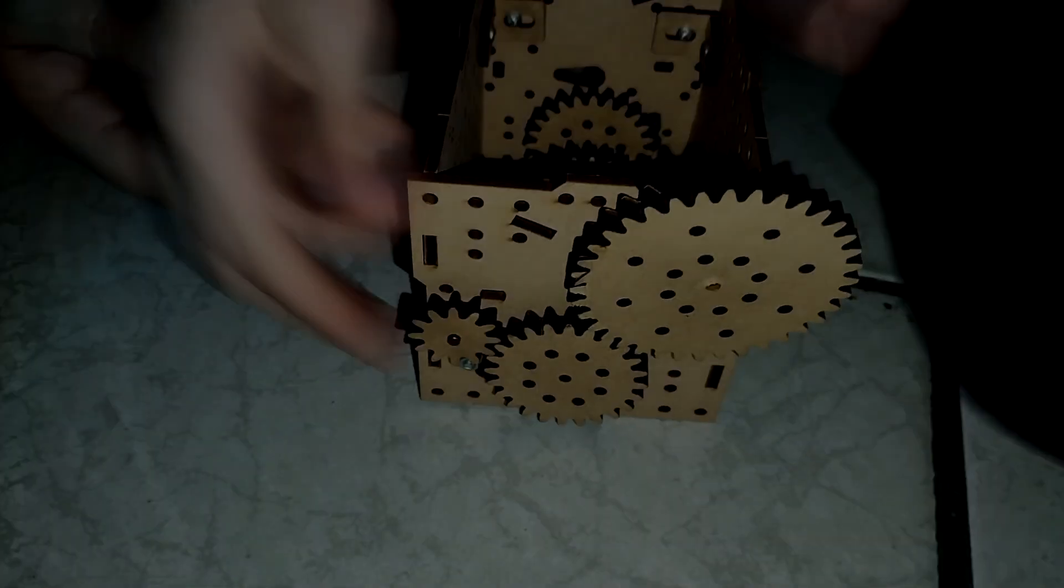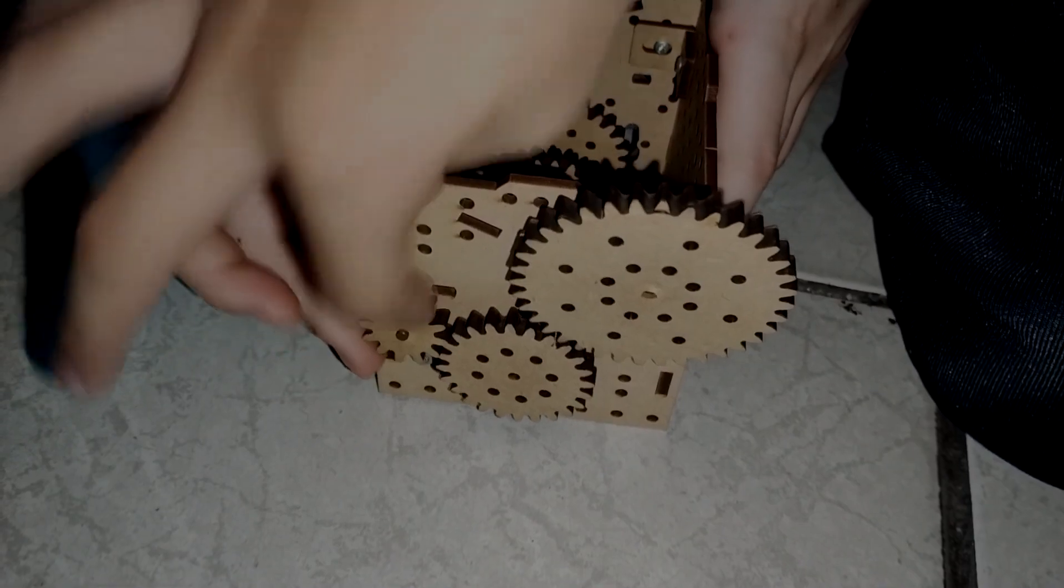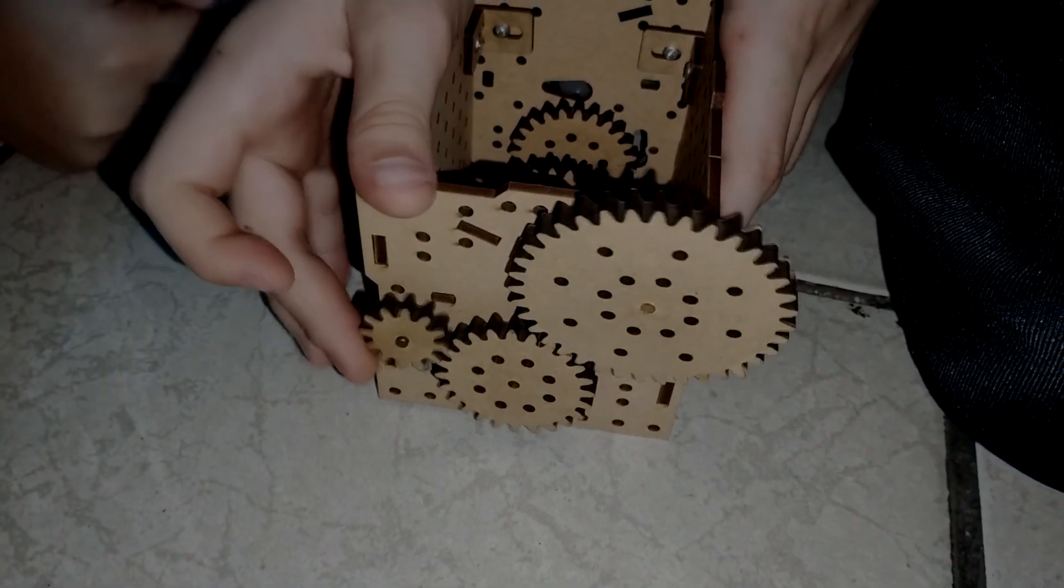Bueno, ¿cómo funciona esto? Les comento: los engranajes transmiten movimiento circular mediante el contacto de las ruedas dentadas. El piñón es la rueda dentada más pequeña.